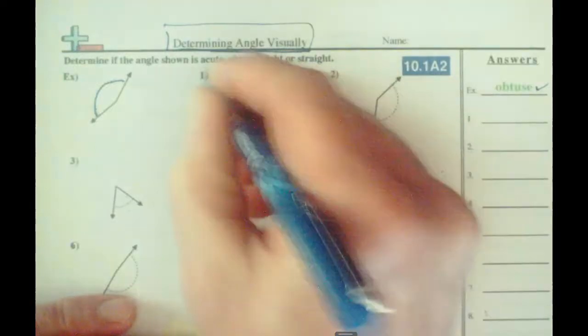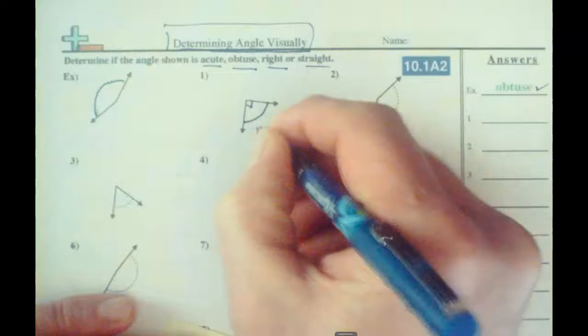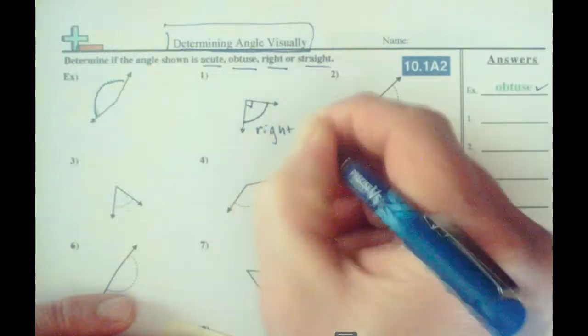Here are my choices: acute, obtuse, right, straight. And I don't care if you write it over there. I'm just going to write it right here. This is a right angle. I'll use the angle sign.